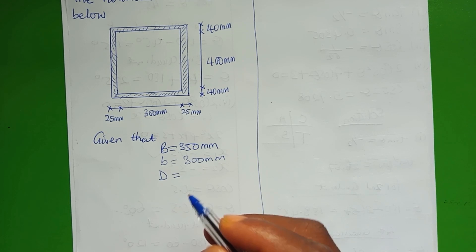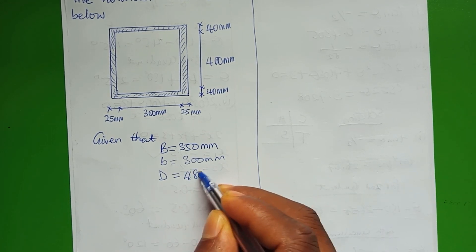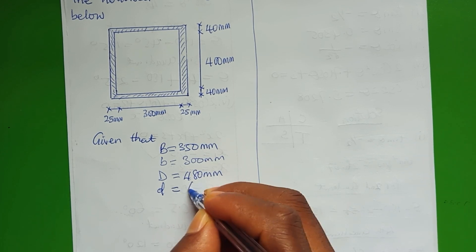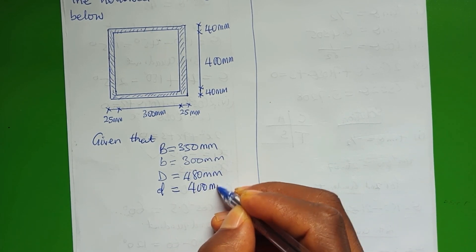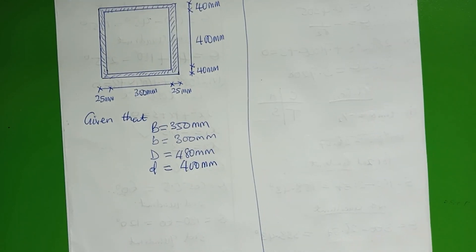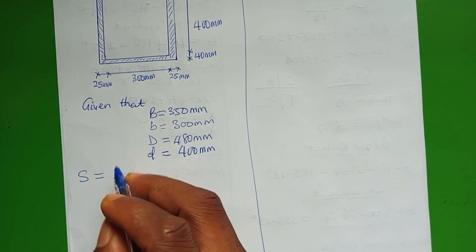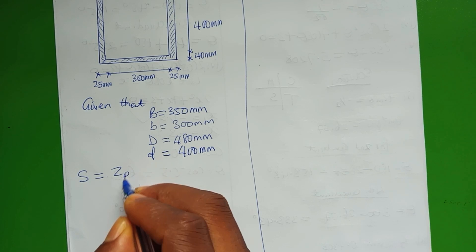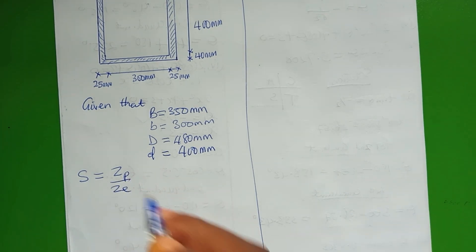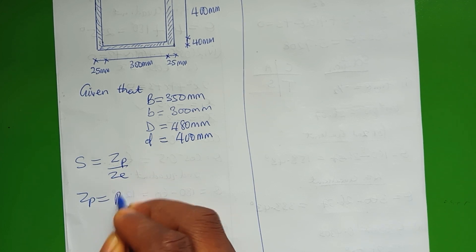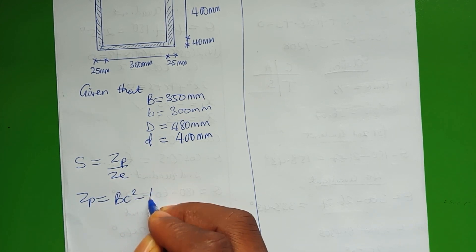Then our D is the overall depth which is 480 millimeters, and our small d is 400 millimeters. Recall that shape factor is equal to plastic modulus over elastic modulus.